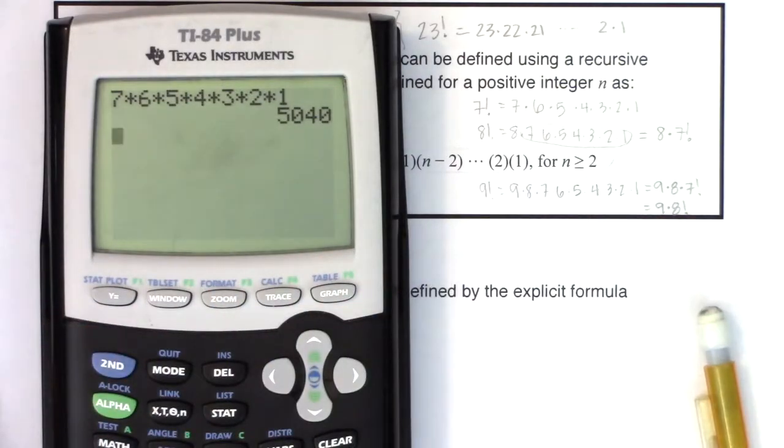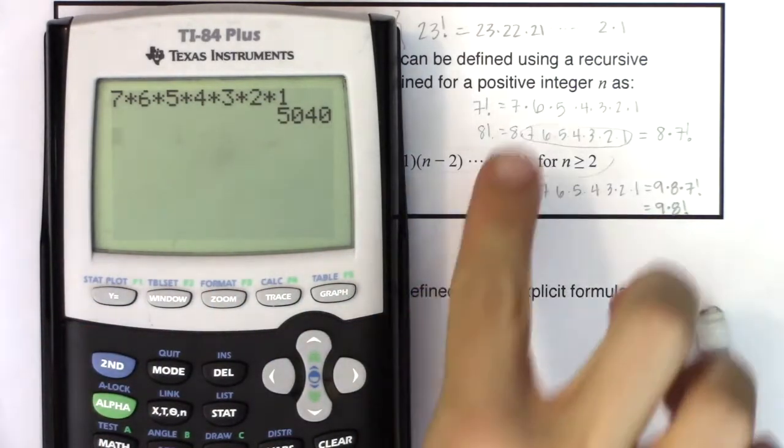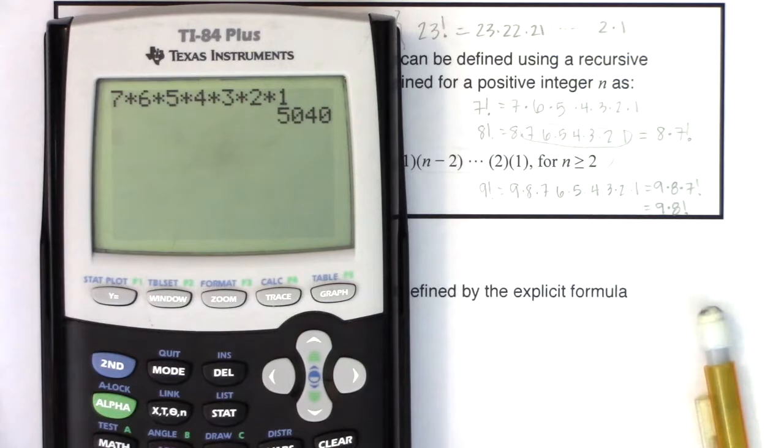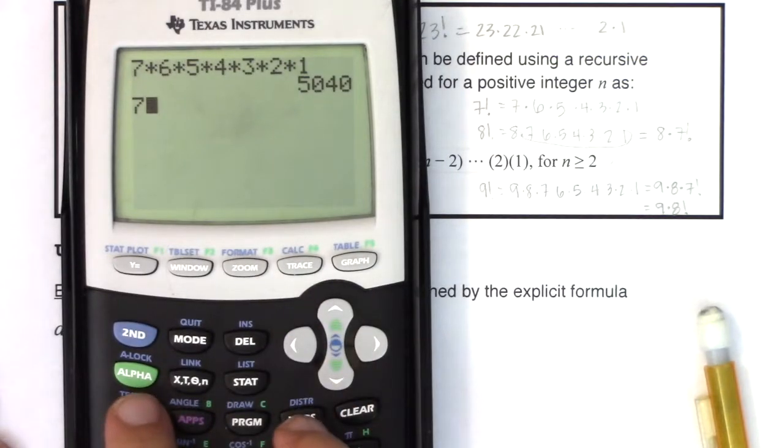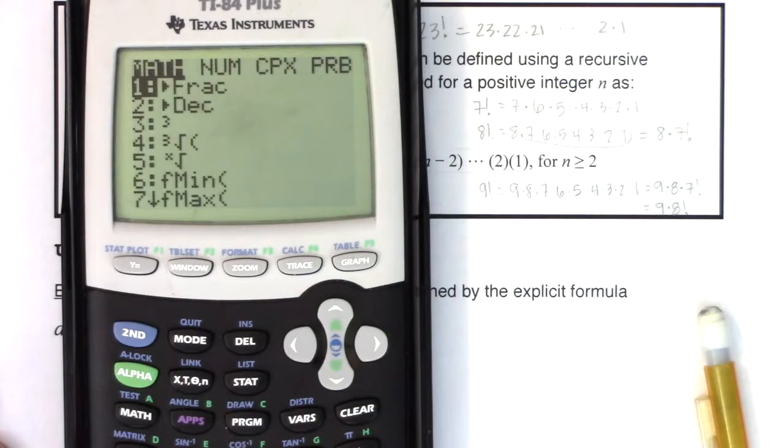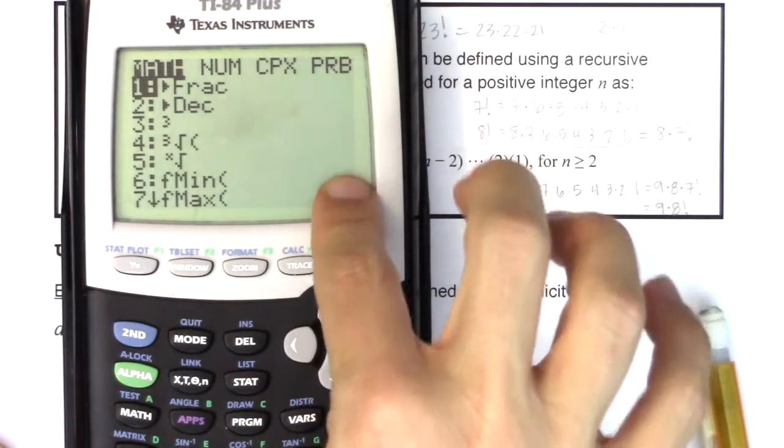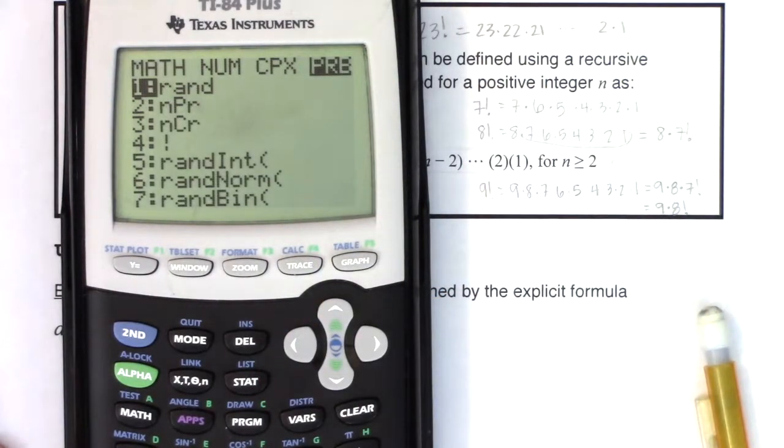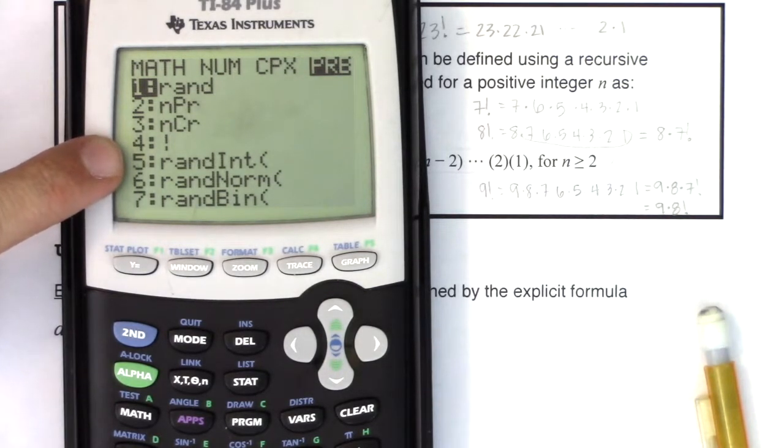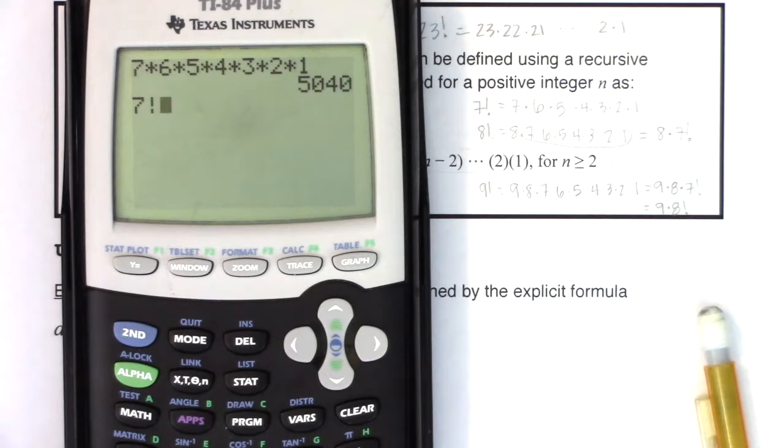It'd be pretty obnoxious to type in 23 times 22 times 21 all the way down to two and one. Maybe you'd do it for extra credit. But let me show you where the button lives on your calculator to help you work around that. So we're going to go ahead and we'll do seven factorial together. So hit seven, and then I want you to hit your math key. We've hit math before and go over to your PRB menu.